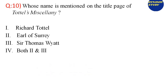The last question of today's quiz: Whose name is mentioned on the title page of Tottel's Miscellany? Tottel's Miscellany is the collection of English sonnets jointly written by Sir Thomas Wyatt and the Earl of Surrey. But whose name is mentioned on the title page? Option 1, Richard Tottel. Option 2, Earl of Surrey. Option 3, Sir Thomas Wyatt. Option 4, both two and three. The right answer is option number 2, the Earl of Surrey — only the name of the Earl of Surrey is mentioned on the title page of the collection.